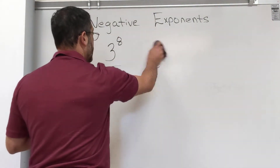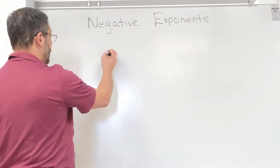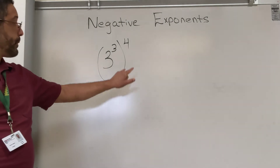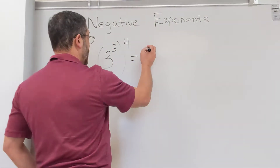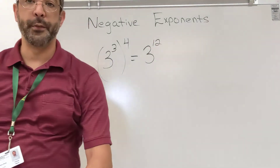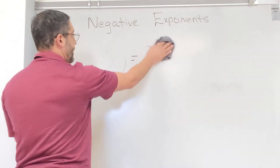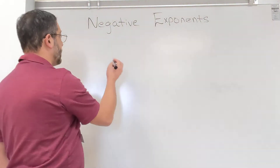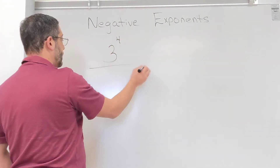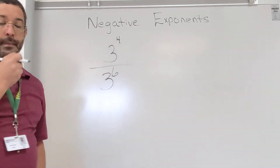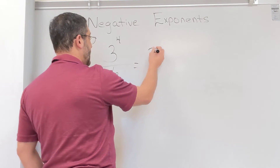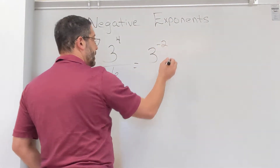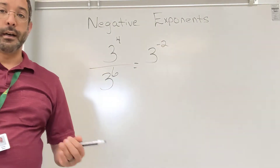We learned yesterday the power-to-a-power rule: if I have 3 to the third power and all of that raised to the fourth power, I keep my base and multiply those exponents, giving me 3 to the twelfth. Now one thing we haven't really dealt with until now is what we call a negative exponent. For example, if I have 3 to the fourth power divided by 3 to the sixth power, using the normal rule — four minus six — I get 3 to the negative second power.